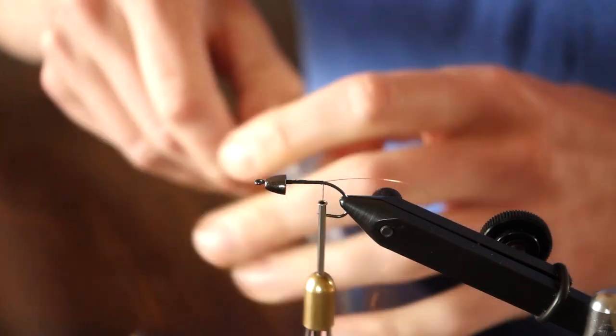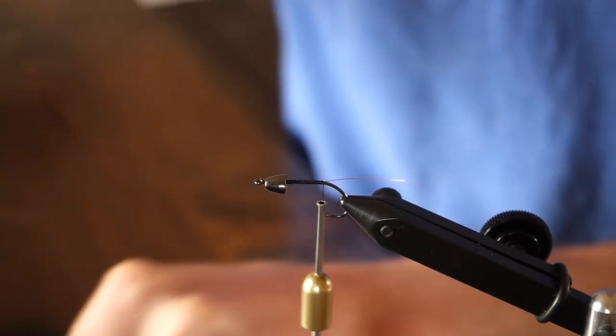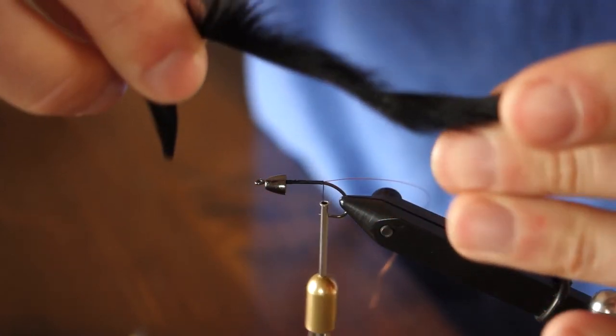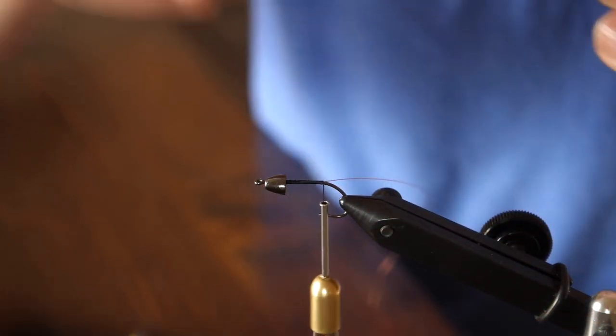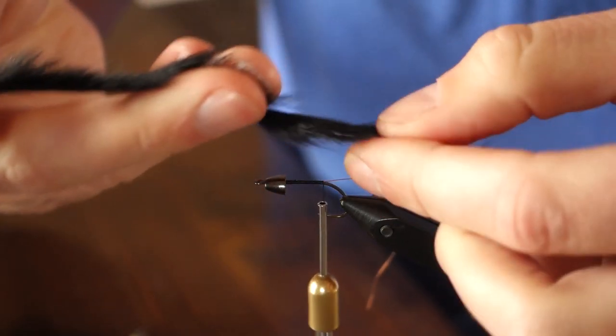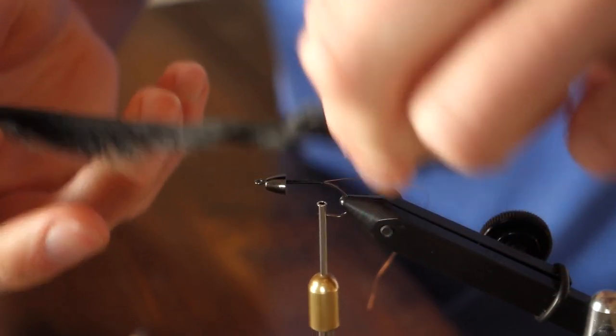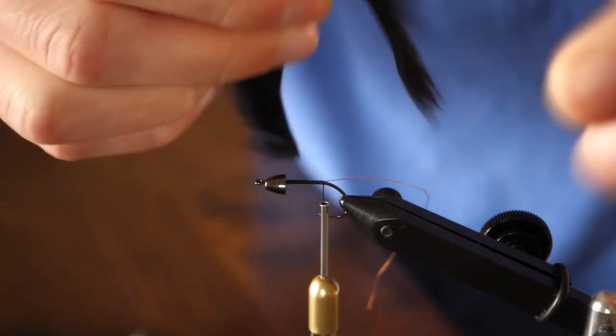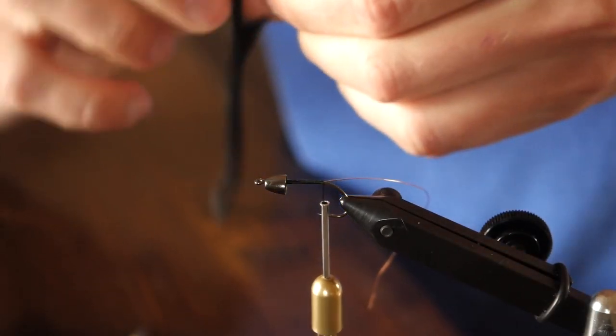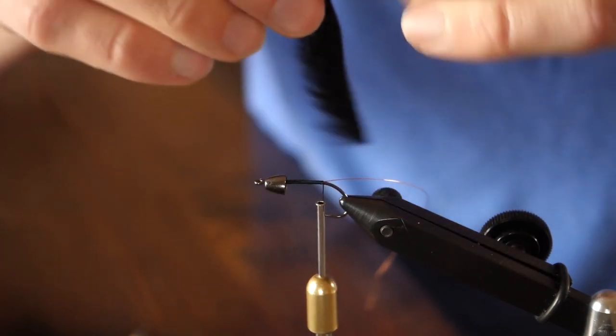Once I've got that wire tied in, I'm going to pull out my zonker strips. I'm using black pine squirrel for this one. I also tie this fly in brown or natural and olive as well. This first piece of zonker is going to make both the tail of the fly and the spine or the mohawk of the fly. I'm going to measure it out to be about two hook shanks in length.